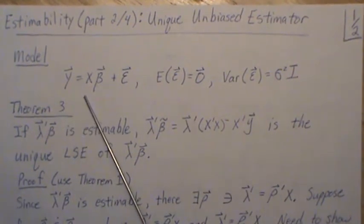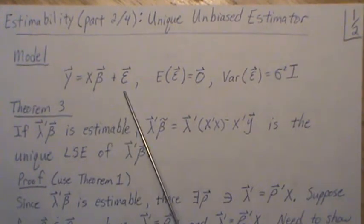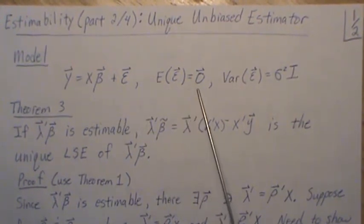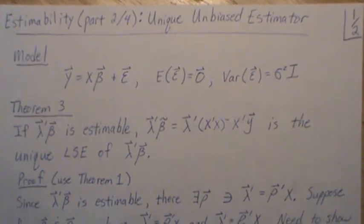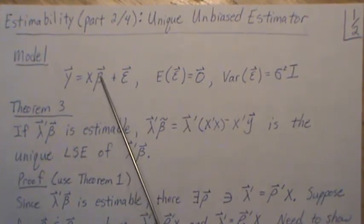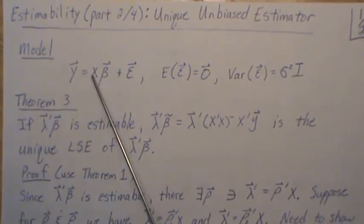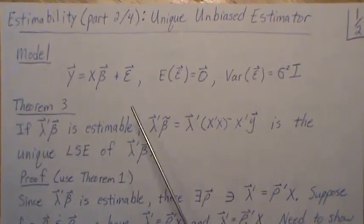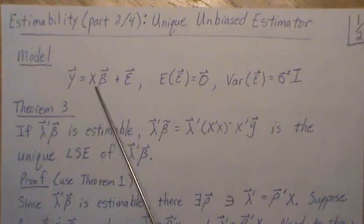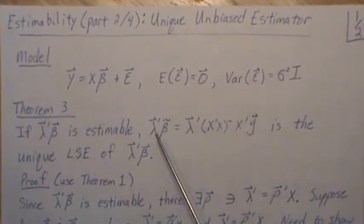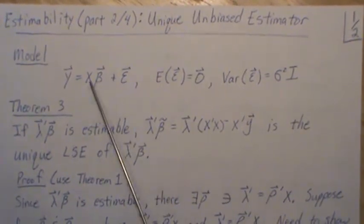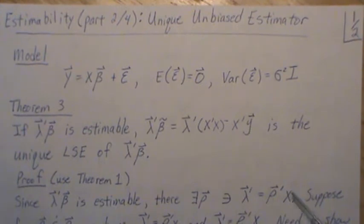As a reminder, we're in the model setting y equals X beta plus epsilon, where the mean of epsilons is 0, constant variance sigma squared, and covariances are 0. The column space of X — say beta is a p by 1 vector, meaning p columns — has rank less than p, let's call it r. So the least squares estimates for beta are not unique; there's an infinite number, but X times beta is unique. That was covered in a previous video.